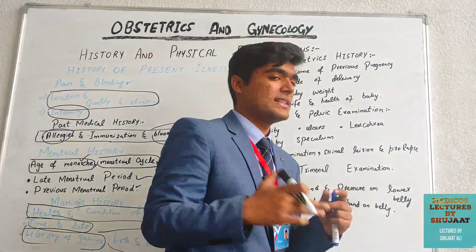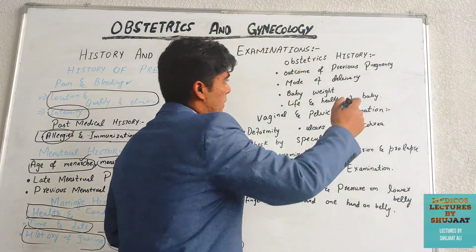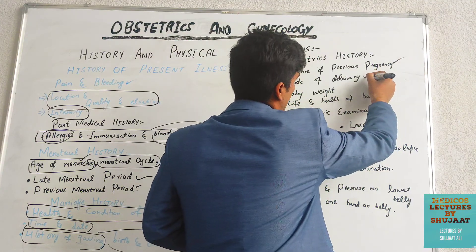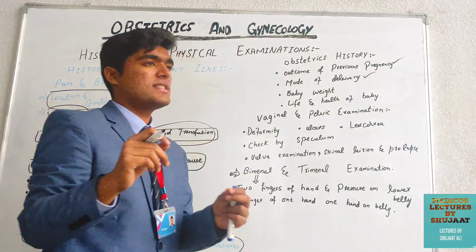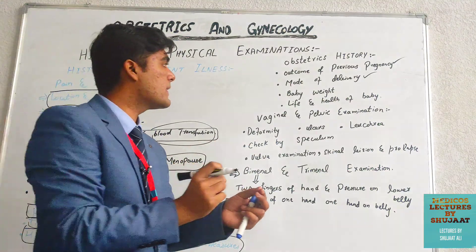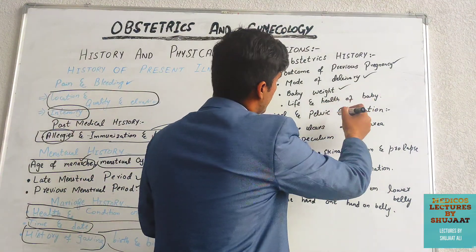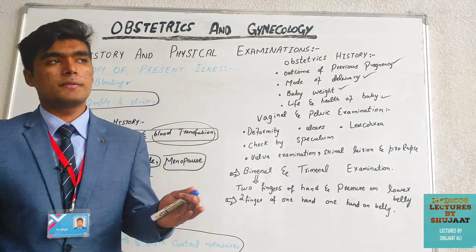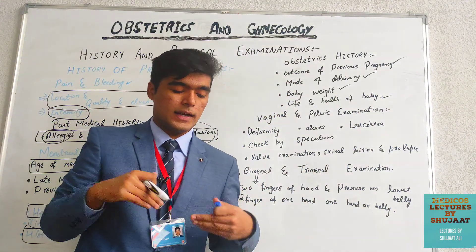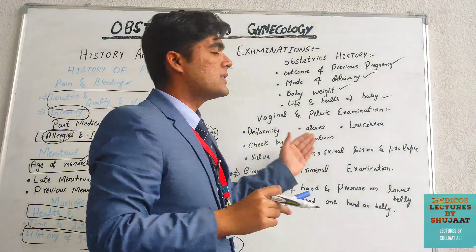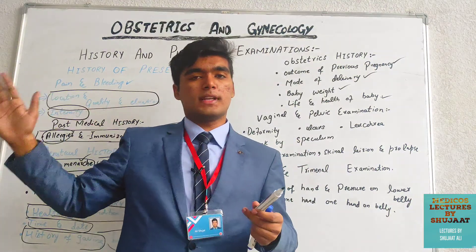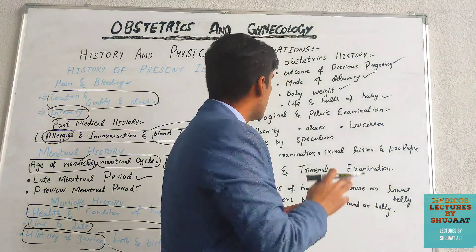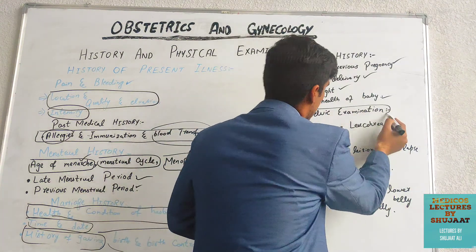In obstetric history, we discuss the outcomes of previous pregnancies, mode of delivery — whether by caesarean section or normal delivery — baby weight, and the life and health of the baby: how the baby survived, its health currently, health during pregnancy, and in the first month after birth.